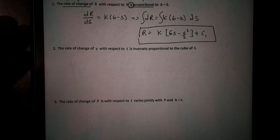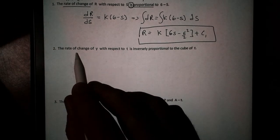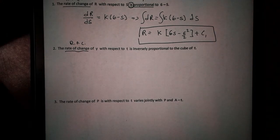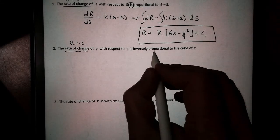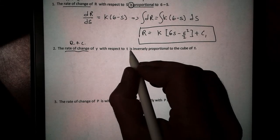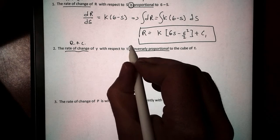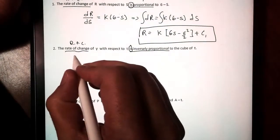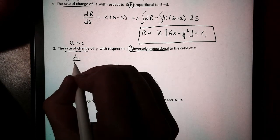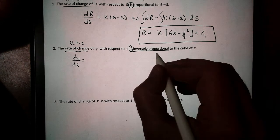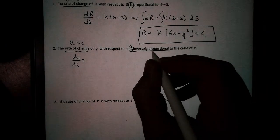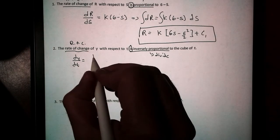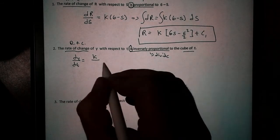All right, so let's take a look at number 2. Number 2 says the rate of change of Y with respect to T is inversely proportional to the cube of T. So again, we've got this phrase inversely proportional. Any time we see the word is in algebra, that's going to be our equal sign. So the rate of change of Y with respect to T—this is saying we're taking the derivative of Y with respect to T—is inversely proportional, meaning we're going to divide instead. So our K this time goes on top, and we're going to divide by the cube of T, T cubed.